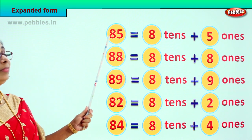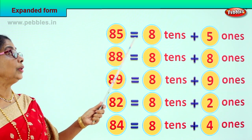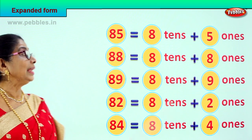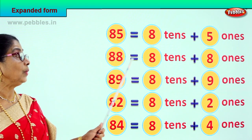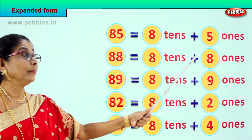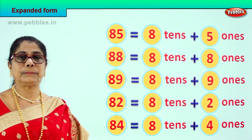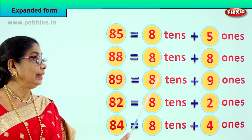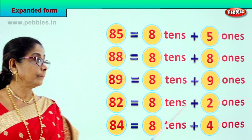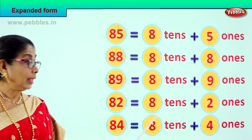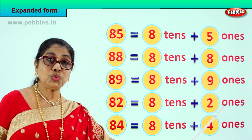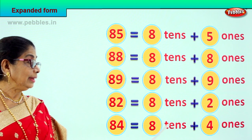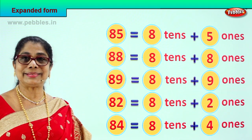Let's read together. 85 is equal to 8 tens plus 5 ones. 88 is equal to 8 tens plus 8 ones. 89 is equal to 8 tens plus 9 ones. 82 is equal to 8 tens plus 2 ones. 84 is equal to 8 tens plus 4 ones. Good!